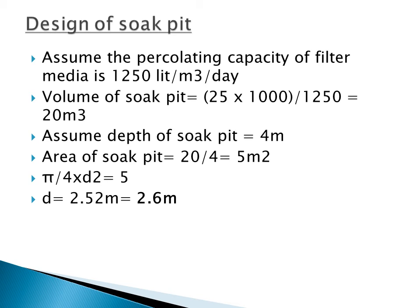The depth of the soak pit is assumed as 4 meters. Therefore, the area of the soak pit equals volume divided by depth: 20 divided by 4 gives 5 square meters. Since the cross-section is circular, using the area formula pi over 4 times D squared equals 5, the diameter D is obtained as approximately 2.52 meters, rounded off to 2.6 meters. The question also asks you to draw a rough sketch of the septic tank and soak pit with dimensions marked.